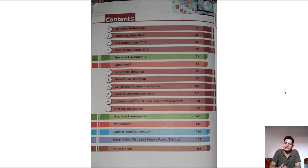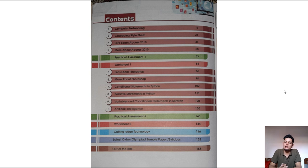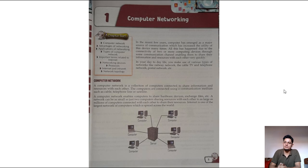On this page you can see the contents or index. The first chapter is Computer Networking, the second is Cascading Style Sheets, and the next is 'Let's Learn Access.' We start with the first chapter on page number five.